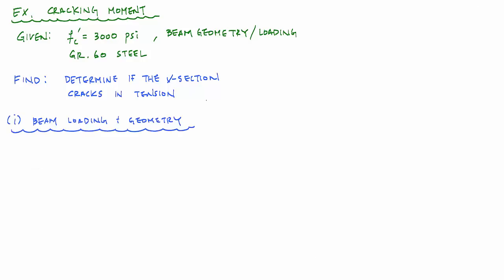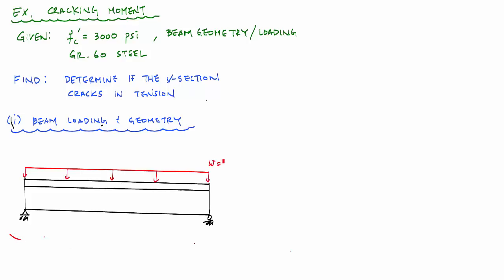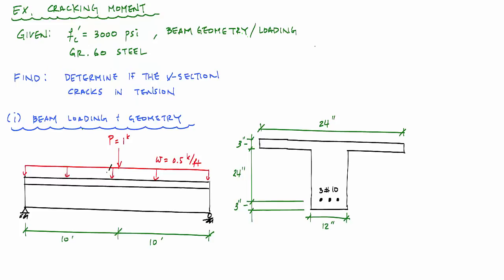The beam is a simply supported reinforced concrete T-beam with a uniformly distributed load of about 0.5 kips per foot (the beam weight) and a concentrated load of one kip right in the middle. The beam has a length of 20 feet, with the one-kip load applied at mid-span (10 feet). The cross section is a T-beam with a 24-inch wide flange, 12-inch wide web, total height of 30 inches, and a 3-inch tall flange.